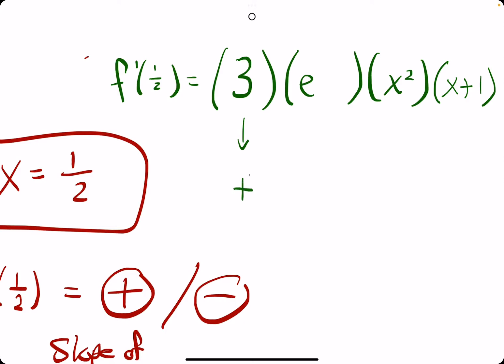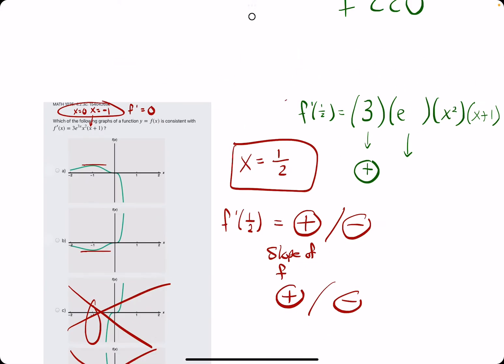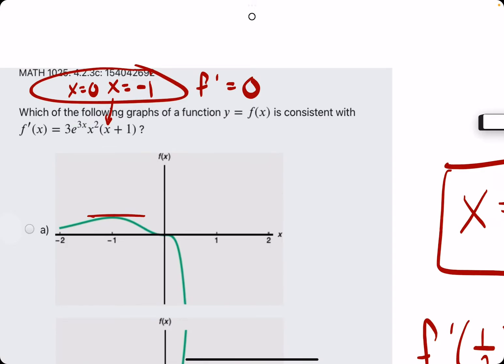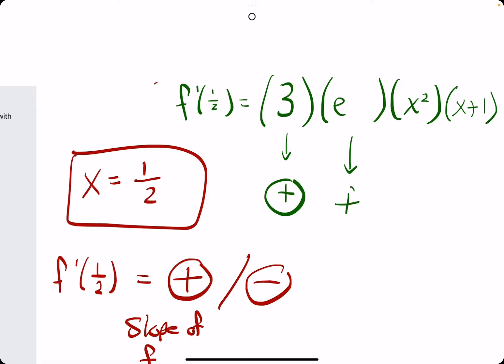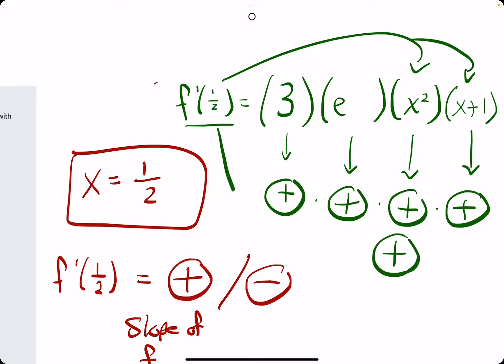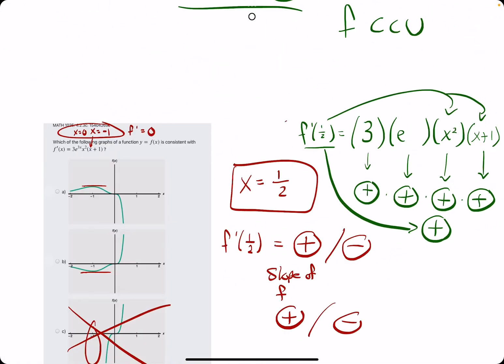So 3 is positive. E, a big takeaway, is no matter what the exponent of e is, e is always positive. So keep that in mind when you're going about this problem if you want to work it out by hand. x squared, if we're plugging in 1 half to x squared, really anything squared is positive. So x squared is especially positive. And then plugging in 1 half to x plus 1 will keep this factor positive. So across the board, positive times positive times positive times positive will tell us or will give us f prime at 1 half being positive.